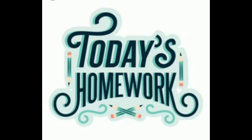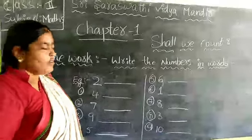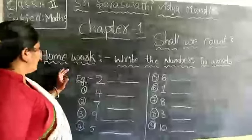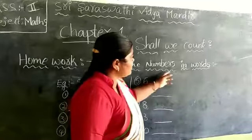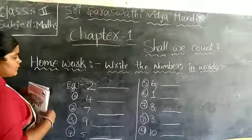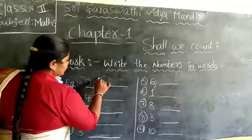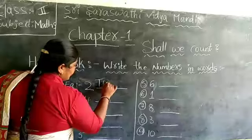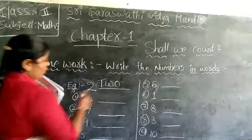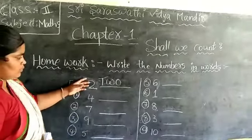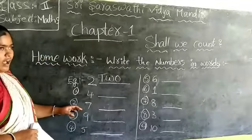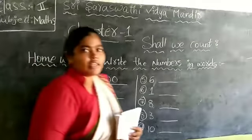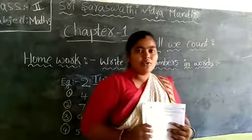Okay, children, I will give homework. Do it. Today's homework is: write the numbers in words. Example: 2 — T, W, O. Okay, children, all of you, right? Okay, children. Bye. See you again.